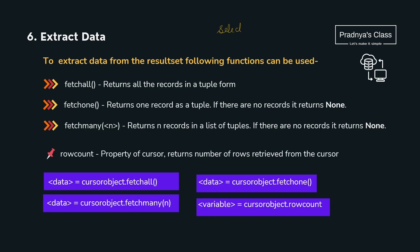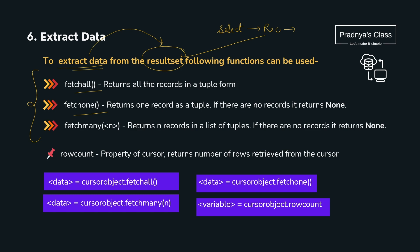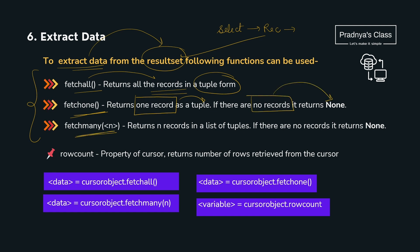With the SELECT command you will be getting all the records — you can call it a result set. To extract data from the result set we have three different functions: fetchall(), fetchone(), and fetchmany(). fetchall() fetches all the records in tuple form. fetchone() fetches only one record as a tuple; if there are no records it returns None. fetchmany(n) fetches n records from the result set, returning a list of tuples; if there are no records it returns an empty list.